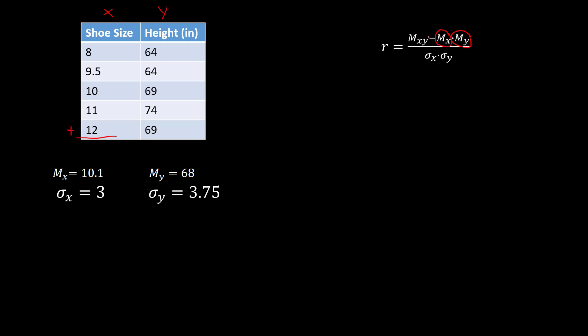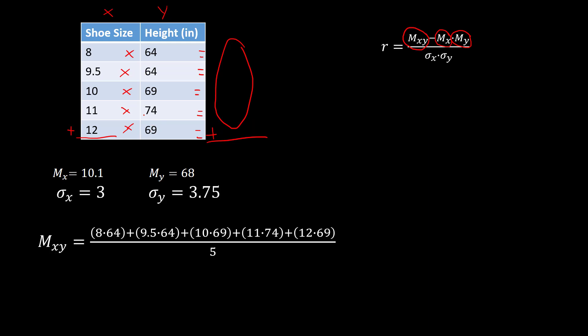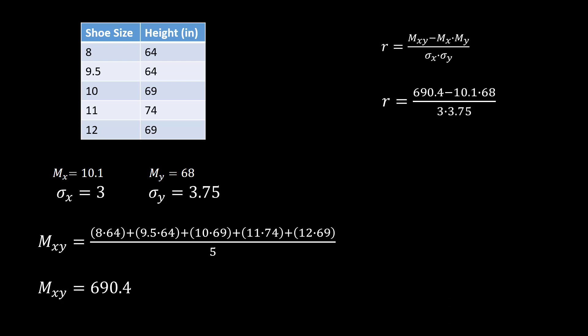The sigma x and sigma y — the standard deviations of shoe sizes and heights — come out to 3 and 3.75 respectively. Then the only part left is M sub xy: we multiply each paired x and y value (8 times 64, 9.5 times 64, 10 times 69, and so on), average those products by adding and dividing by 5, and get 690.4. Plugging everything in: 690.4 minus 10.1 times 68, divided by 3 times 3.75 gives a correlation coefficient of 0.32 — positive but pretty low correlation based on these five data points.